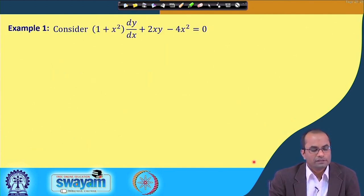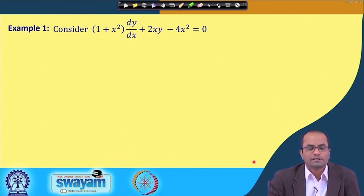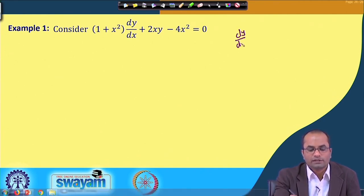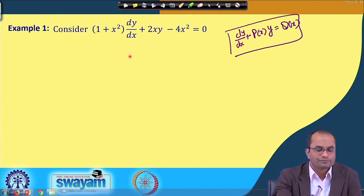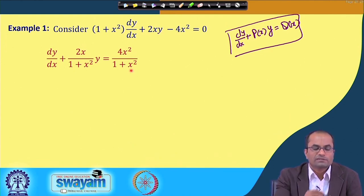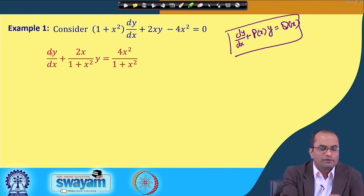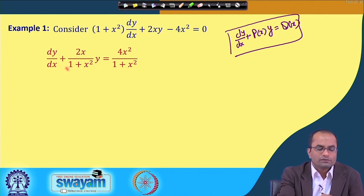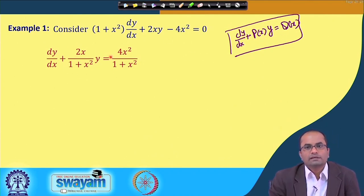Example 1: Consider (1 + x²)dy/dx + 2xy - 4x² = 0. We put this into standard form by dividing by (1 + x²): dy/dx + [2x/(1+x²)]·y = 4x²/(1+x²). This is linear in y, where P(x) = 2x/(1+x²) and Q(x) = 4x²/(1+x²).